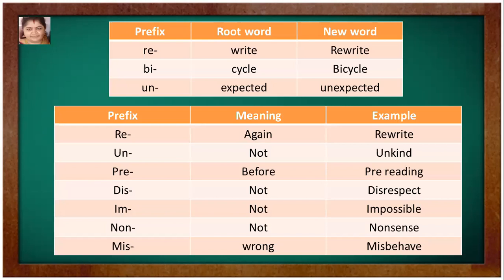Some prefix meanings: re means again, un means not, pre means before, dis means not, im means not, non means not, mis means wrong. Examples: re + write = rewrite (again). Un + kind = unkind (not kind). Pre = pre-reading (before). Dis + respect = disrespect. Im + possible = impossible. Non + sense = nonsense. Mis + behave = misbehave.